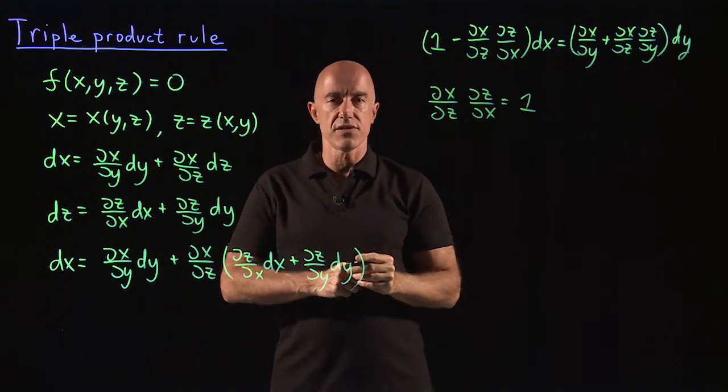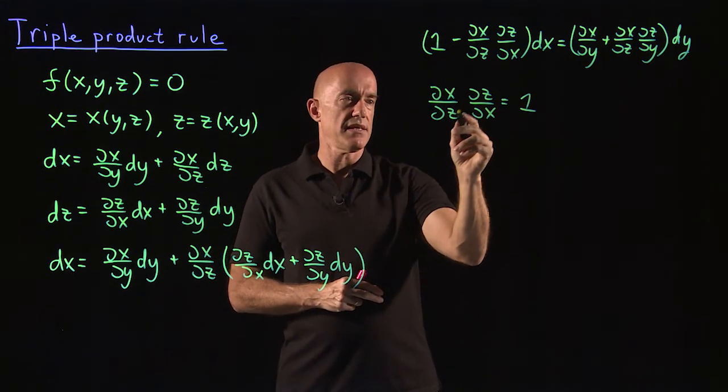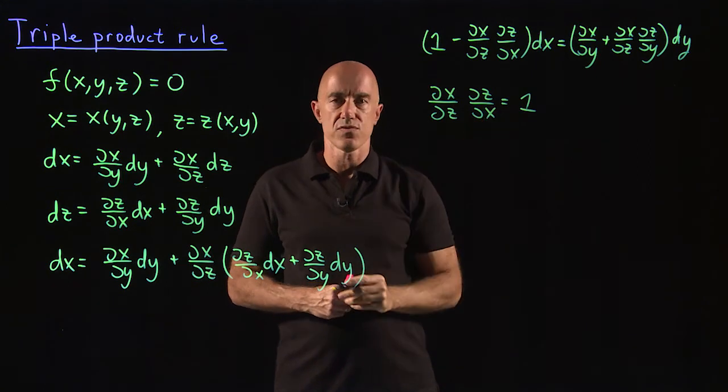So that's a relationship that makes sense to us. dx dz, dz dx equals one.